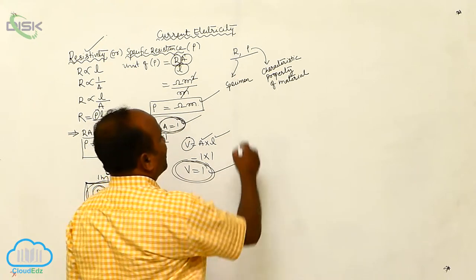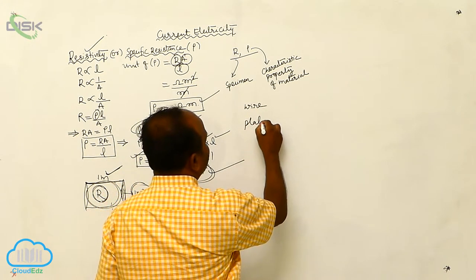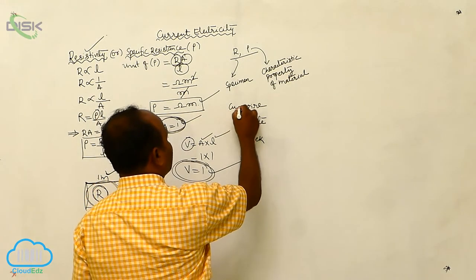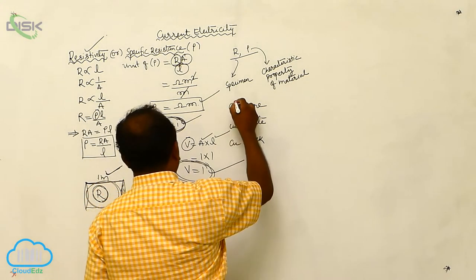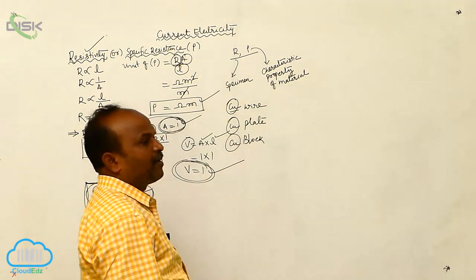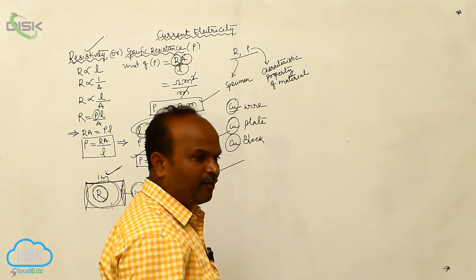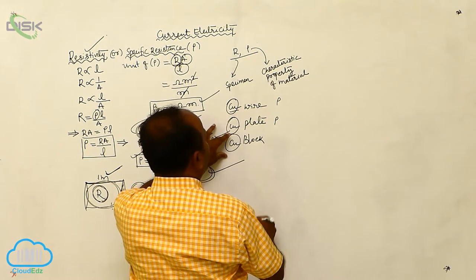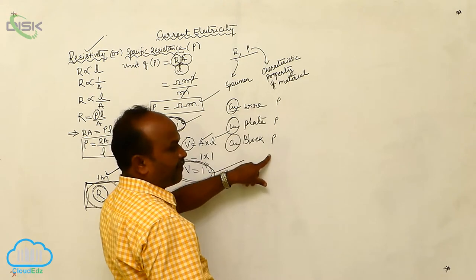Let us consider there is a copper wire, a copper plate, and a copper block. The material is not changed, thereby resistivity is the same for all three. For example, copper resistivity is 1.8 into 10 to the power of minus 8 Ohm meter. The copper wire resistivity, copper plate resistivity, and copper block resistivity are all rho, because these three are made of the same material. Resistivity is the same.